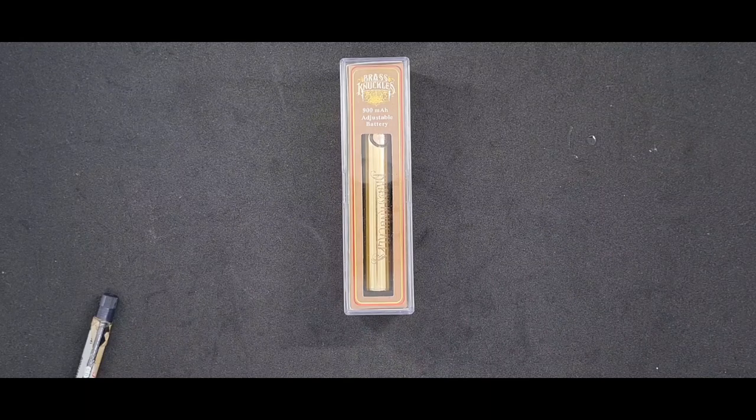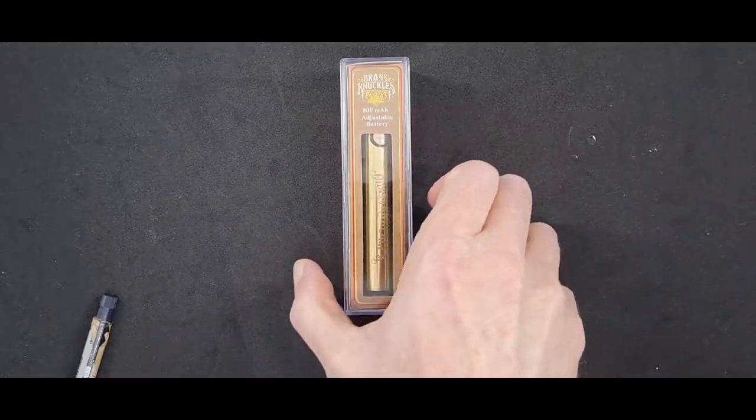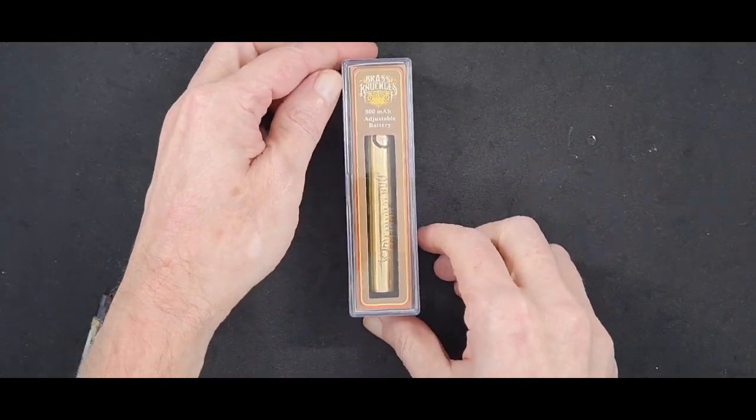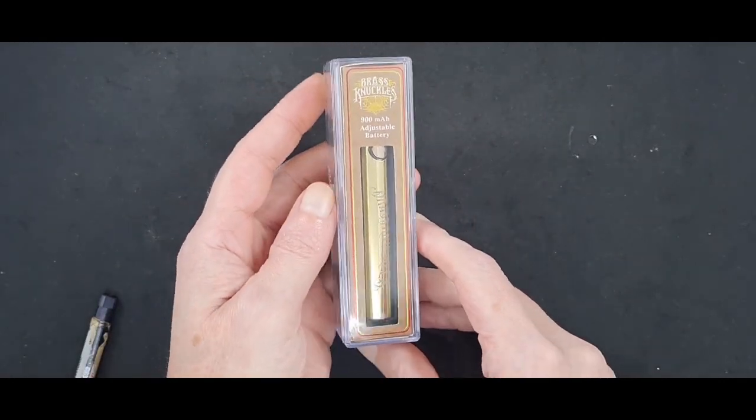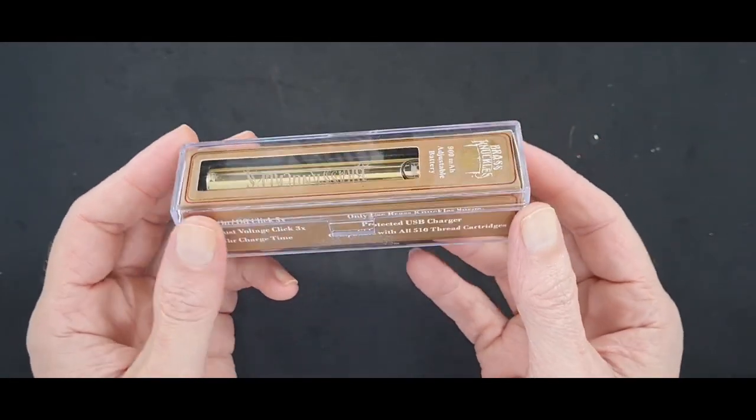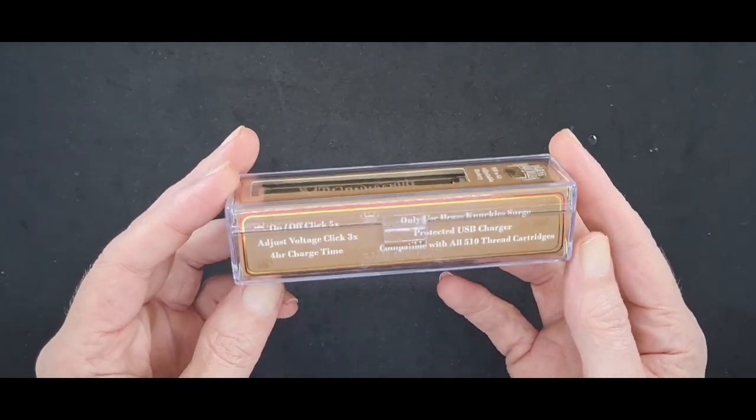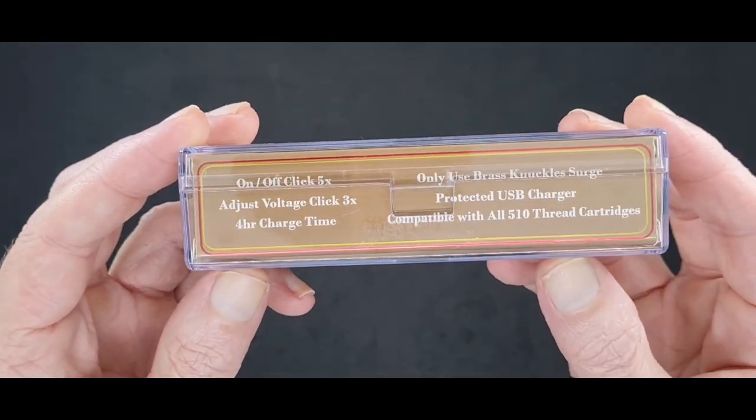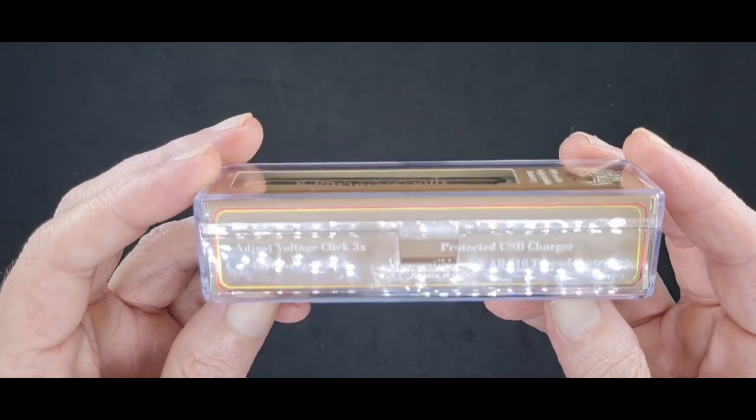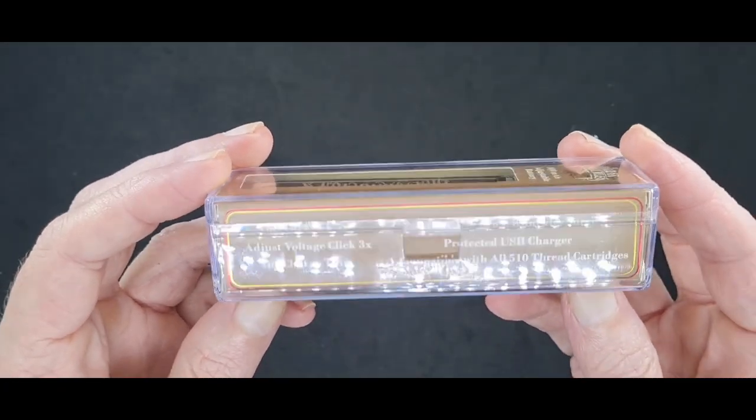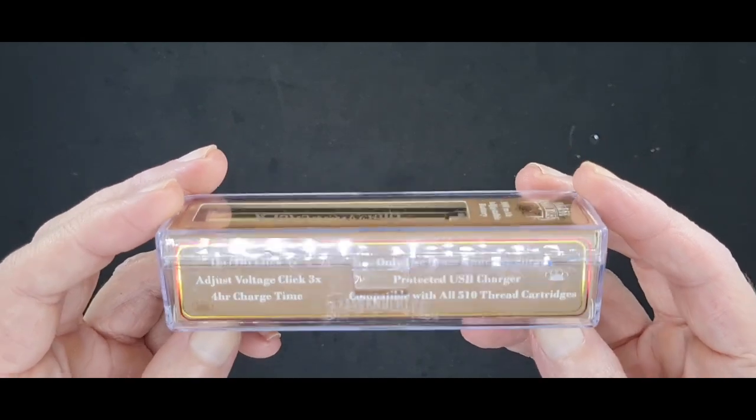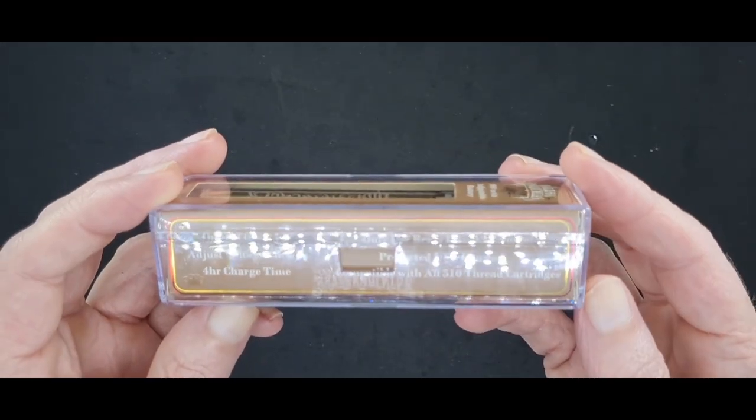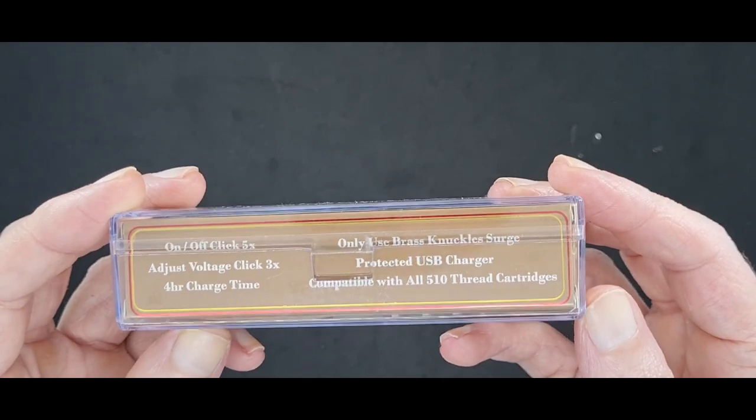Now you have to be careful with these, they do have clones. What is a clone? A clone is a copy, it's not the original. The original one comes in a box like this and has a lot of writing on the side: on and off five clicks, adjustable voltage three clicks, four hour charging time.